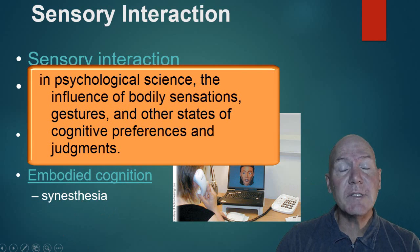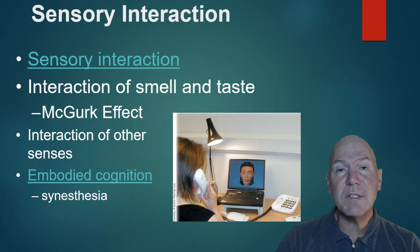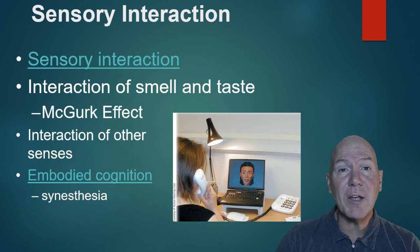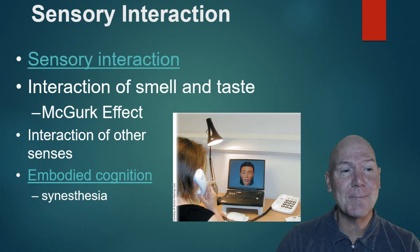Synesthesia is when senses become mixed up. Some people taste colors — when they eat food, the flavor translates into a color they see, so they choose meals based on which colors go together rather than which flavors.